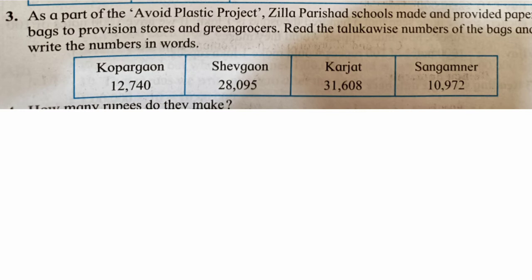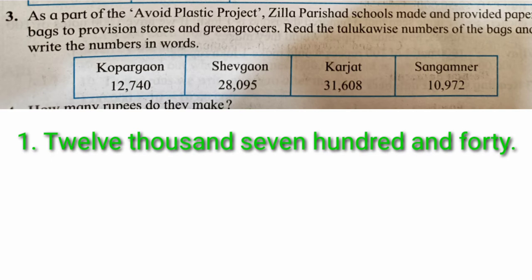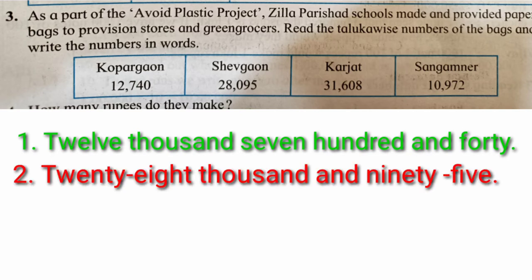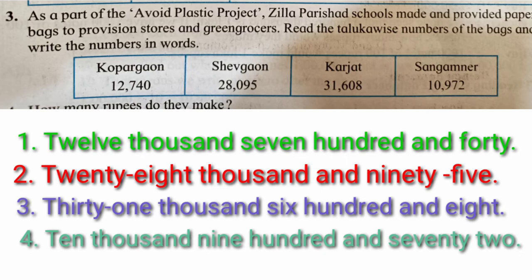The next question: as part of an 'Avoid Plastic' project, a Jilla Parishad school made and provided paper bags to provision stores and grocery stores. Read the taluka-wise numbers of bags and write the numbers in words. Coppergaon: twelve thousand seven hundred and forty; Shegaon: twenty-eight thousand and ninety-five; Kharzat: thirty-one thousand six hundred and eight.